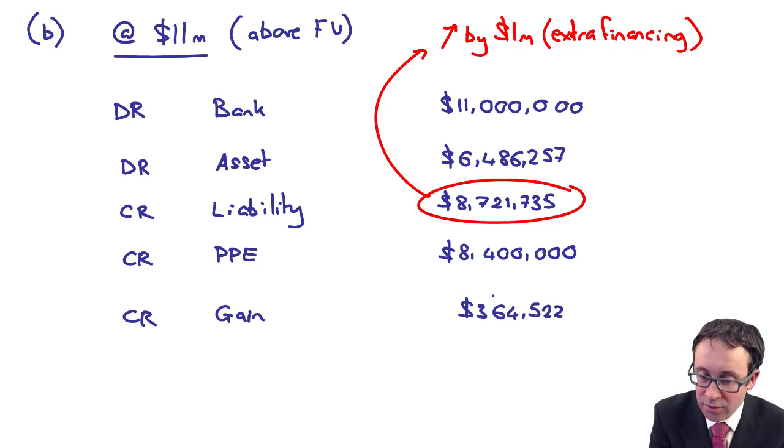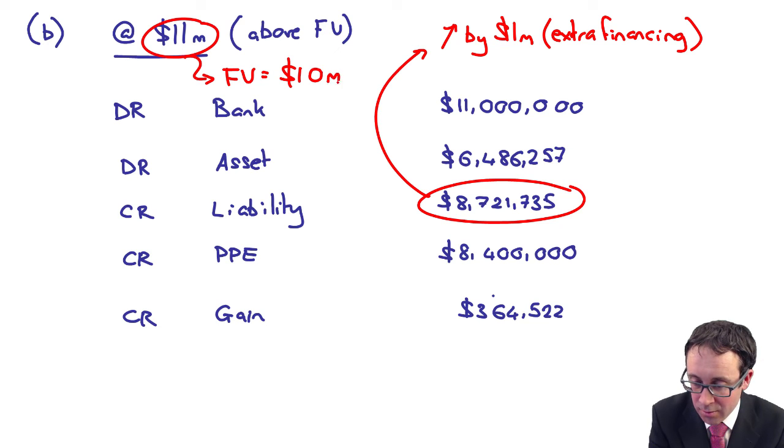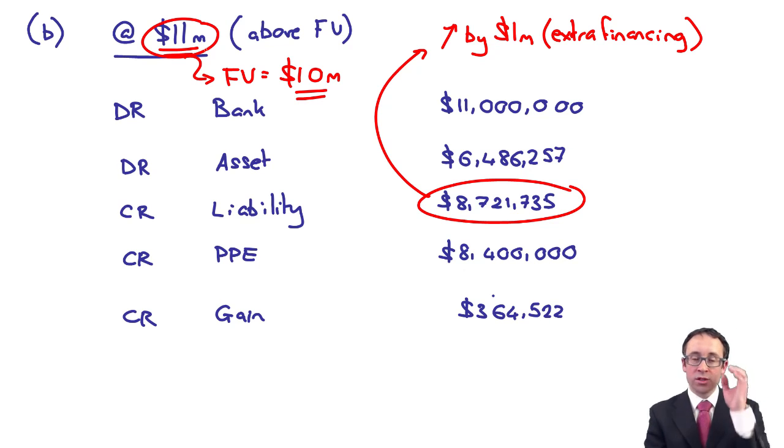Where's that extra financing come from? Well, we've financed $11,000,000. That's what we've received. And the fair value is $10,000,000. That's what we should have received. We didn't. We received a little bit more. So we add in that extra $1,000,000 with regards to the additional financing.